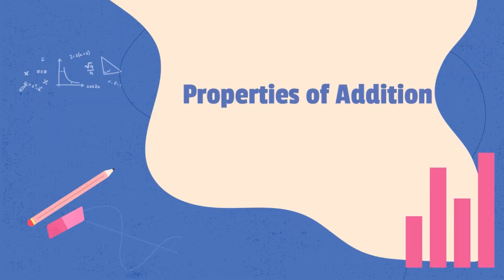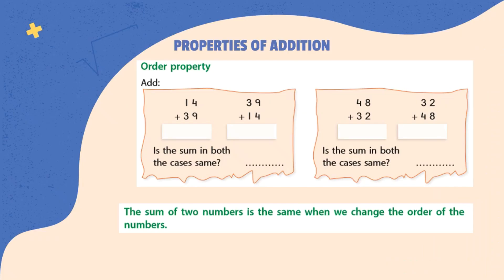Our next topic is properties of addition. We will discuss 3 important properties of addition. Our first property is order property. This property states that the sum of 2 numbers is the same when we change the order of the numbers.